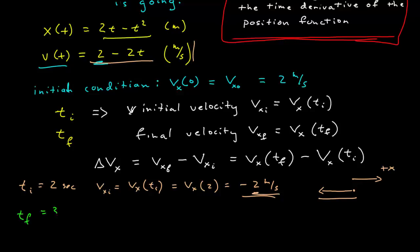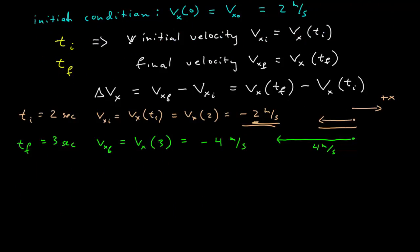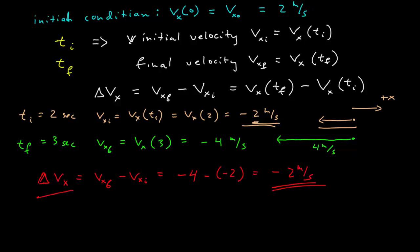For a final time of three seconds, the final velocity is the function evaluated at three: 2 minus 6 = minus four meters per second. At three seconds, the vector has magnitude four meters per second pointing in the negative x-axis. Finally, the velocity difference is the final velocity minus the initial velocity: minus four meters per second minus minus two meters per second, which equals negative two meters per second. The velocity difference is also a vector with magnitude two meters per second pointing in the negative x-axis.